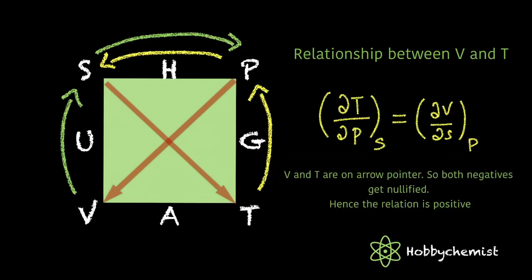Here as T and V are on arrow pointers, both sides of the equation will have a negative sign. Hence our relation is positive.